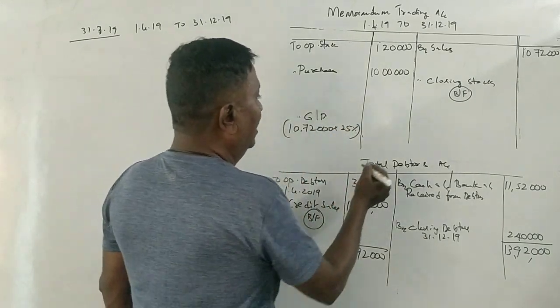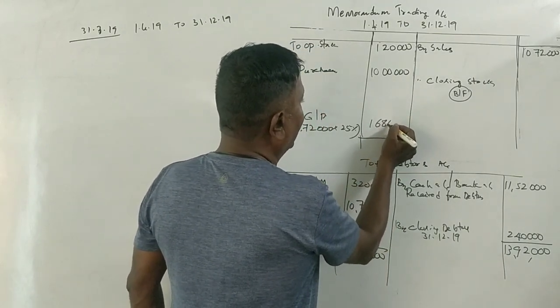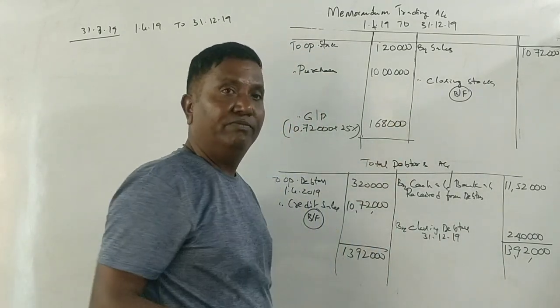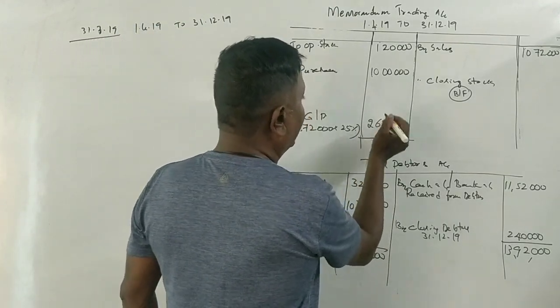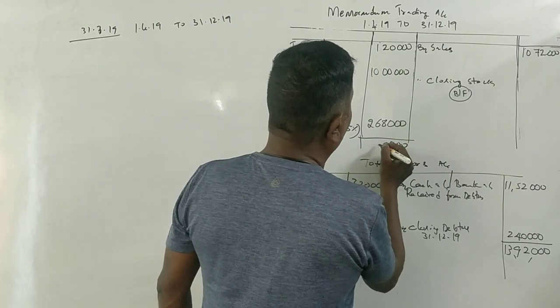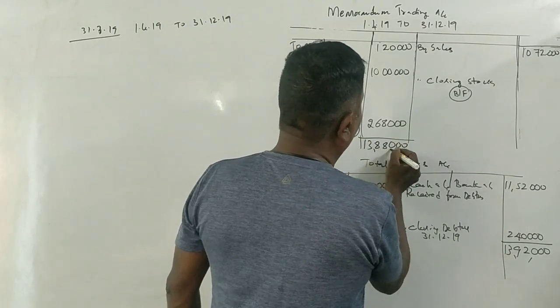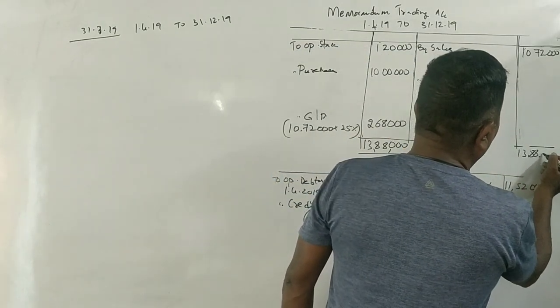How much is it? 1 lakh 86 thousand. 2 lakh. The total is 8,83,13 lakh 98 thousand. Correct.